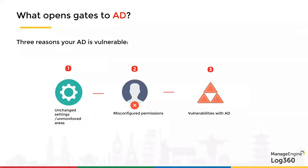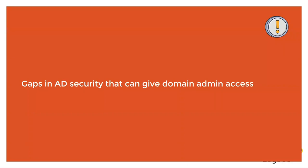Why do Active Directory attacks happen? There are three reasons. Number one: there are certain areas in your Active Directory that are unmonitored and for which security logging is not enabled. Number two: Active Directory has permissions that are either wrong, misconfigured, not noticed by the admin, or liberally granted to users. Number three: like any software, Active Directory has its own set of vulnerabilities. Without further ado, let's look at a few gaps in Active Directory security and how they can give you domain admin access — preferably before lunch.